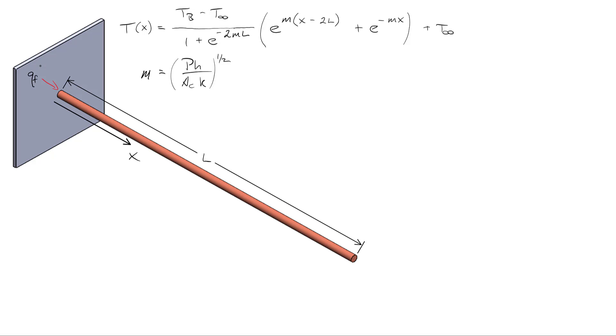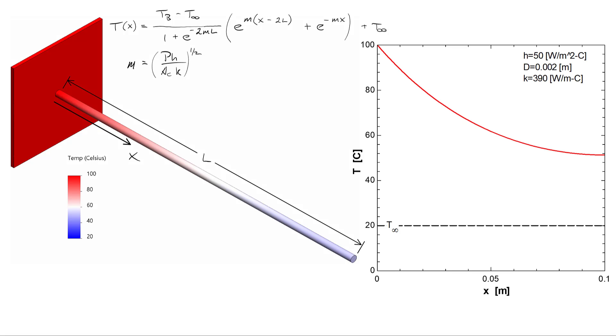Then I want to talk about the trade-offs of long fins versus short fins. To begin with, I want to show an example temperature profile, in which I've set the temperature of the base to be 100 degrees C, and I've specified the heat transfer coefficient, the diameter, and the thermal conductivity, and set the ambient temperature to 20 degrees C.